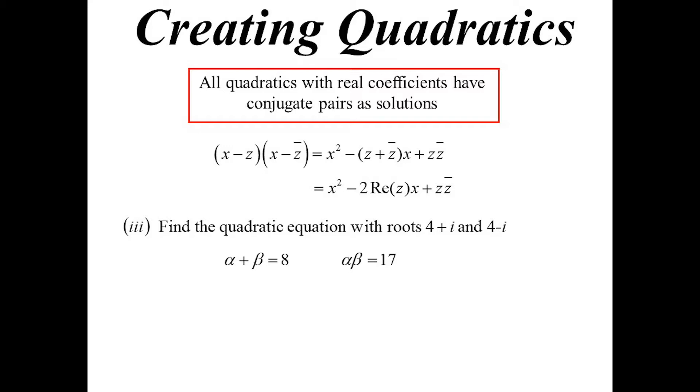The product of the roots will be the sum of the two squares. So there'll be 4 squared plus 1 squared, 17. So my equation must be X squared minus 8X plus 17 equals 0. That's a lot quicker than expanding the whole thing out.